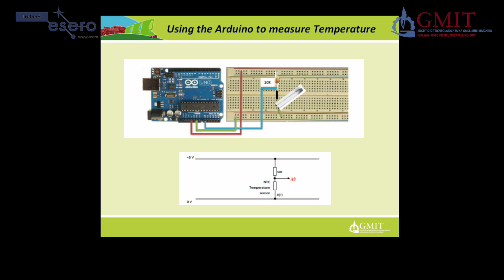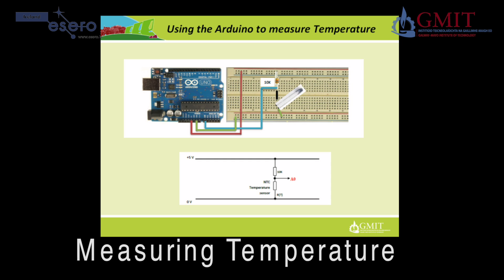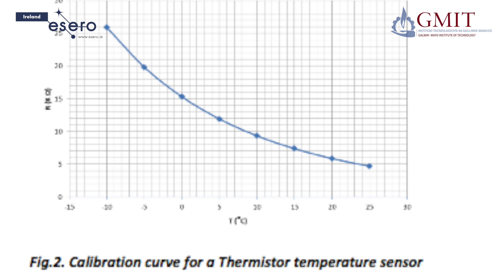One of the tasks in CANSAT's primary mission is to measure the air temperature during the CANSAT's flight. This can be done by building a simple circuit based on an electronic component called a thermistor. The resistance of a thermistor changes with temperature, as seen in this graph from the CANSAT manual. Because the resistance decreases with increasing temperature, it's called a negative temperature coefficient, or NTC temperature sensor.